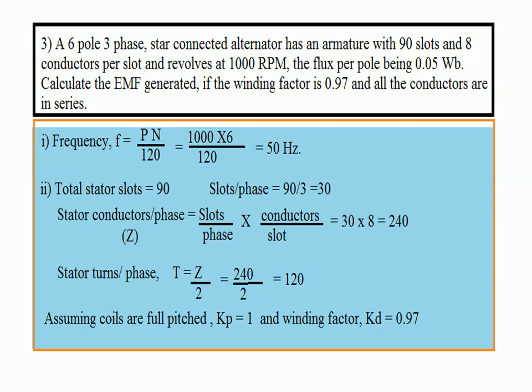Write down the data, then calculate frequency: F = PN/120 = 6 × 1000 / 120 = 50 Hz. Indian standard is 50 Hz — remember. Total stator slots are directly given as 90, hence slots per phase = 90/3 = 30. Stator turns per phase T = Z/2 = 240/2 = 120. Then assuming coils are full-pitched, Kp = 1 and Kd = 0.97.